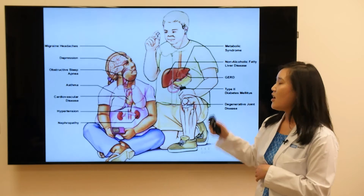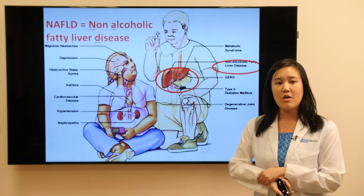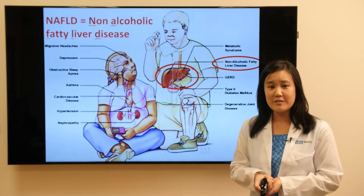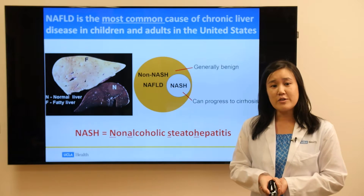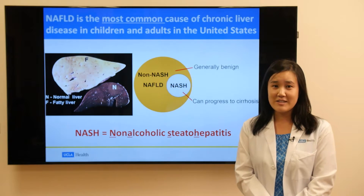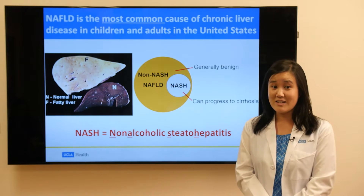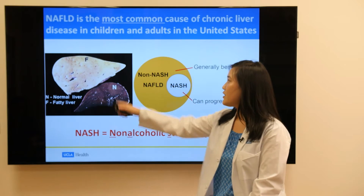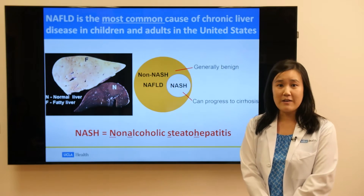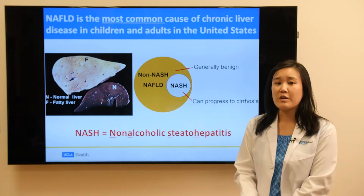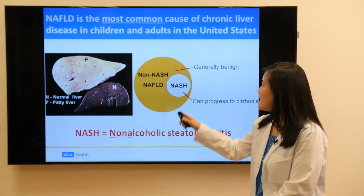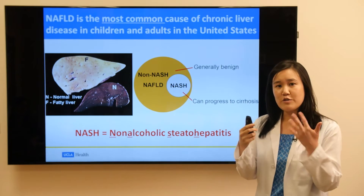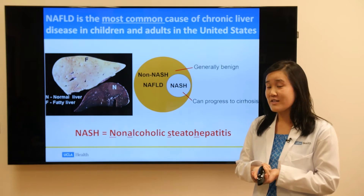The disease process is called non-alcoholic fatty liver disease, or NAFLD for short. From now on, we'll generally just call this fatty liver. Fatty liver, or NAFLD, is the most common cause of chronic liver disease in children and adults in the United States. This is a picture of a healthy liver, and then an unhealthy liver on top of it that has been replaced by fat. The color of the liver in the top picture is abnormal because fat is being accumulated in the liver cells.